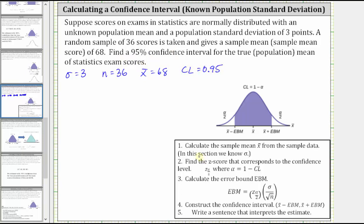Now looking at our notes, the first step is to calculate the sample mean, which in this case was given to us. Step two, we need to find the z-score that corresponds to the confidence level, which in this case is 95%.